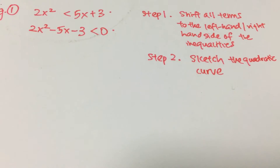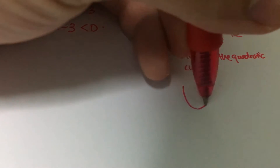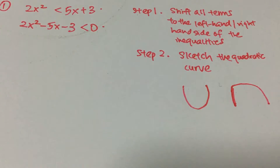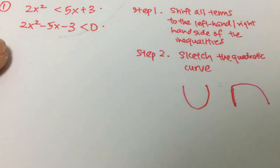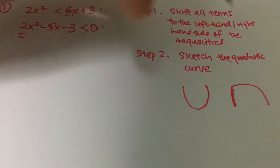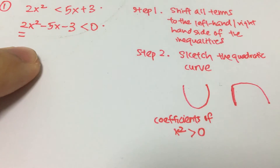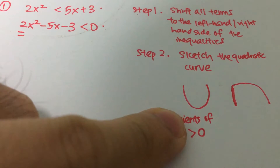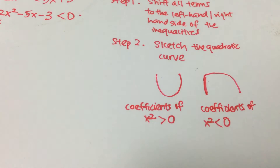A quadratic equation itself has a standard curve shape — it's either a smiley face or a sad face. When do we draw a smiley face? When the coefficient of x squared is positive, the graph of the quadratic equation will be a smiley face. But if the coefficient of x squared is negative, the quadratic curve will be a sad face.